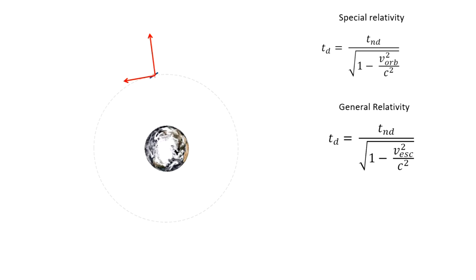Since the time dilation vectors are perpendicular to each other, we can use the Pythagorean theorem to calculate the total time dilations for the satellite.